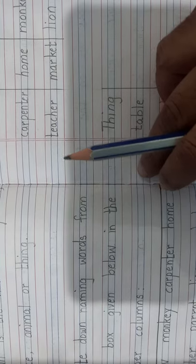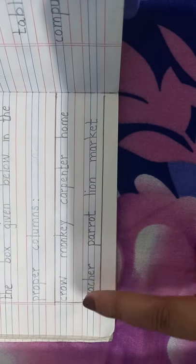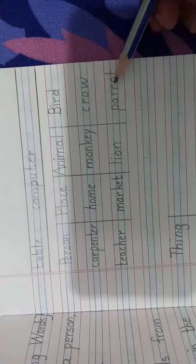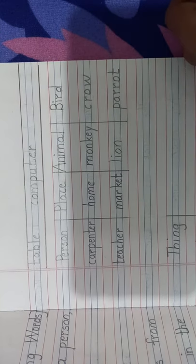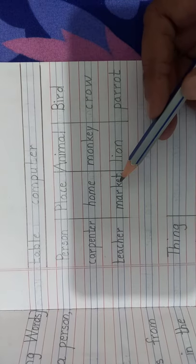Home. Home is where we live, a place. So it will come in the place column. Column number two. Place. Home. Teacher. Who is a teacher? A person who teaches us in school is a teacher. So teacher will come in the first column, that is person. Teacher. The next word is parrot. Parrot is again a bird. So we will write parrot in the bird column. Lion is an animal. Put lion in the animal column. Market is again a place where we go to buy vegetables and fruits. Have you been to a market, children? Yes. So market comes in the place column. Now we have table and computer. What is table and computer? They are things. So write it down in the things column.